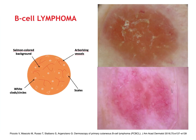In the spectrum of pink lesions, primary cutaneous B-cell lymphoma could also be included. The dermoscopy of this rare tumor is now well known and exhibits the following characteristics: salmon-colored background, arborizing vessels, white circles and scales.